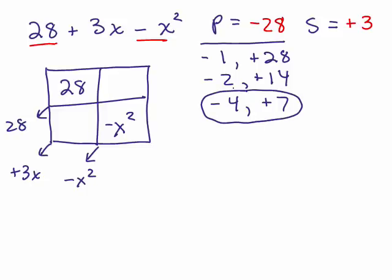So I need to add up and get 3x. So we know the variable part is x, and now I just have to put the negative 4 in one place and the 7 in the other. So let's say I put the negative 4 here and the 7 here. It doesn't matter.